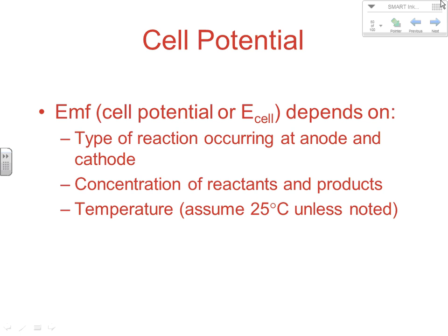Cell potential depends on three things: the type of reaction occurring at the anode and cathode, since different reactions have different changes in potential energy; the concentration of the reactants and products, which plays a large role; and temperature. We look at concentration and temperature differences later when we get into what's called the Nernst equation.